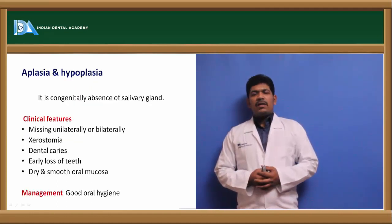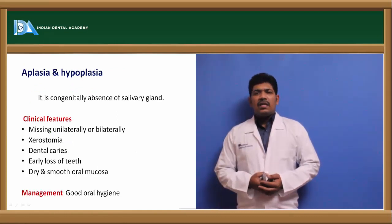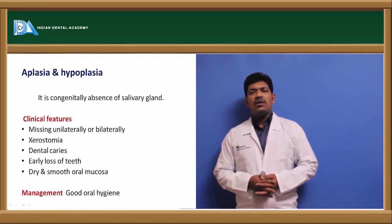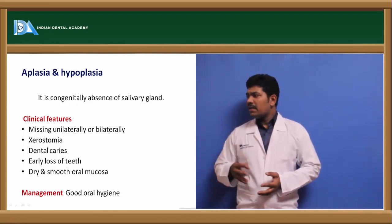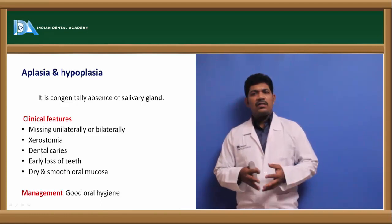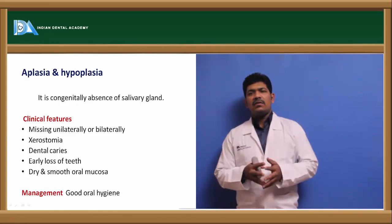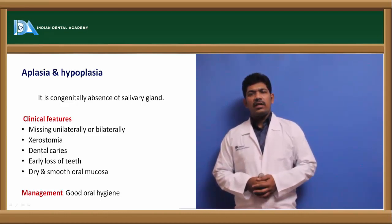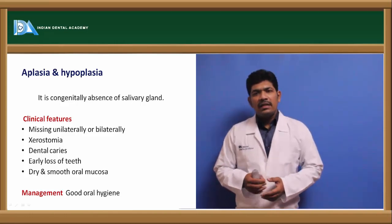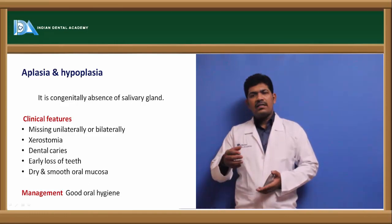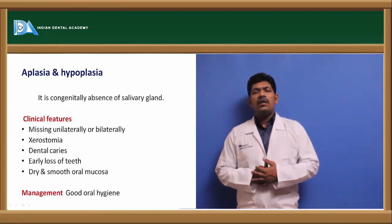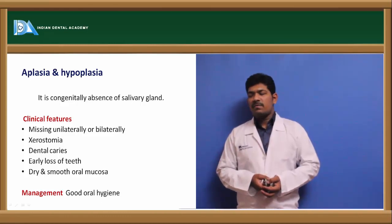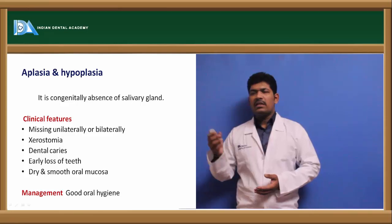Another developmental disorder is aplasia or hypoplasia. Aplasia means there is no development of the salivary gland itself, while hypoplasia means the salivary gland is smaller than its normal size. Since the size of the salivary gland is reduced, the amount of saliva secreted is also less, leading to xerostomia — dryness of mouth — with sequelae such as early tooth loss, rampant caries, dried mouth, and opportunistic fungal infections.